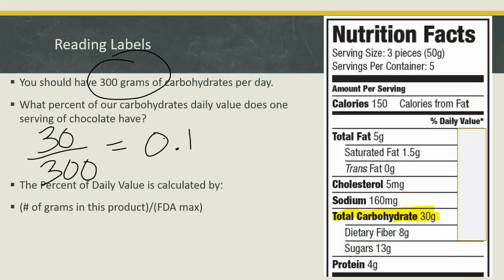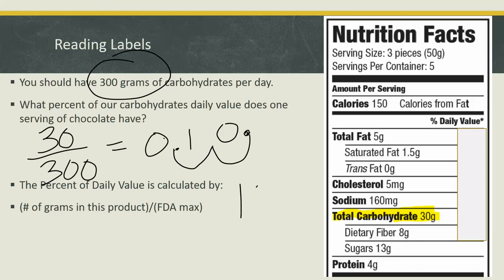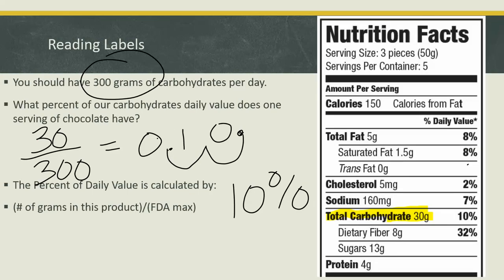Again, to change that decimal to a percent, we need to move our decimal point two places to the right — one, two. There are no numbers there, so we're going to have to fill in that blank with zero. So that means that we get 10% of carbohydrates from this product. Let's check — the FDA also calculated out to be 10% of our daily value.